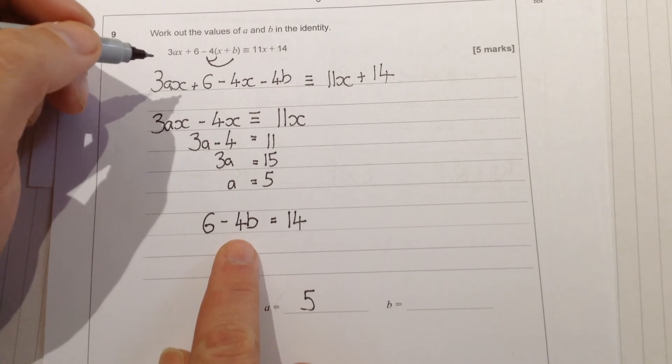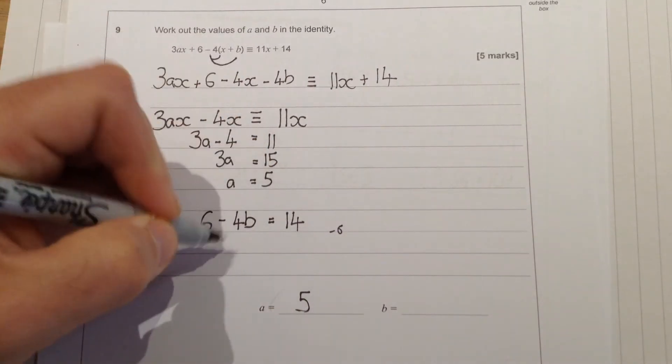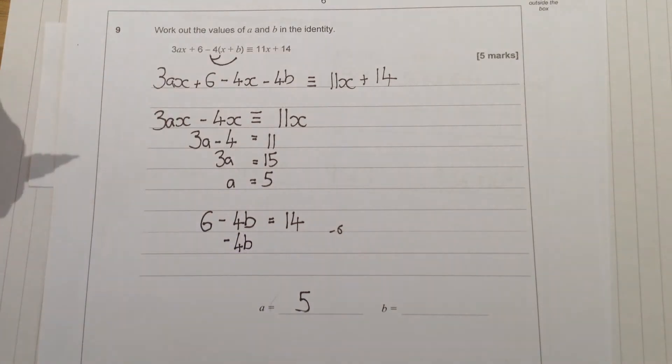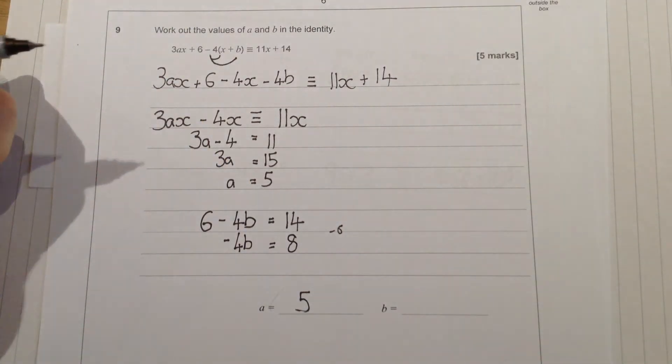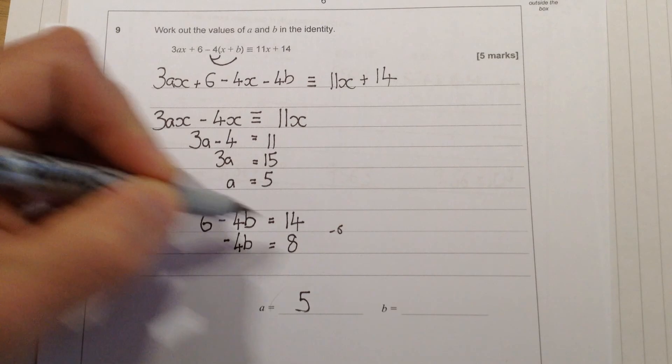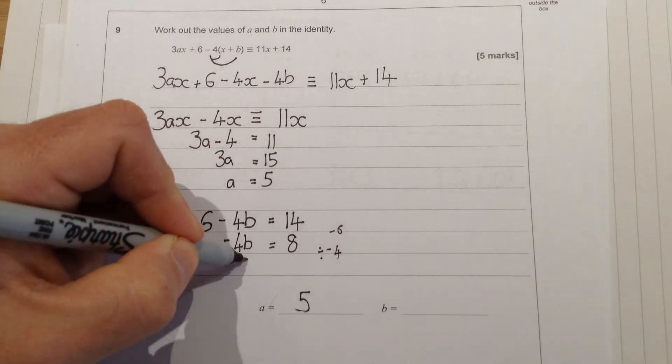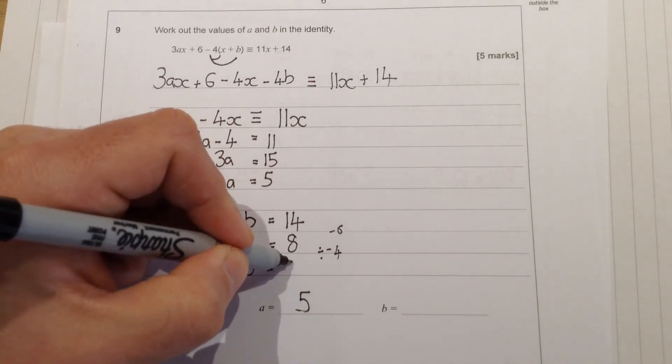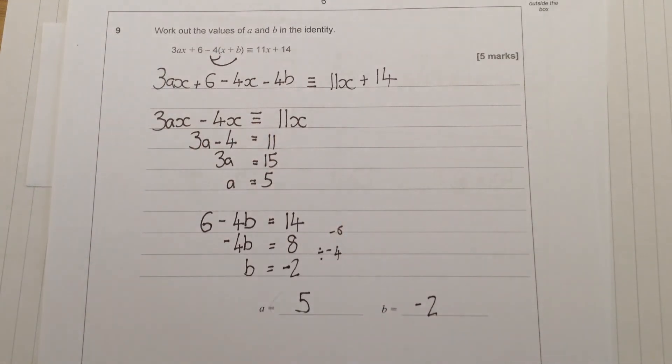In order to solve this one, the first thing I'm going to do is take 6 away from both sides. Just be careful, that leaves me minus 4b. Take away 6 from this side gives me 8. Now because I've got minus 4b, I'm going to have to divide by minus 4. So that will give me b equals 8 divided by minus 4. 8 divided by 4 is 2, so divide by minus 4 will give me minus 2. And there is my value of b.